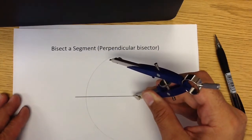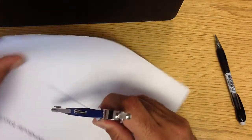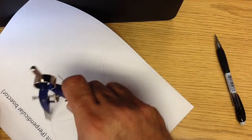It's almost a semicircle and then I'm going to poke at the other end of my line segment and I'm going to draw another arc here.